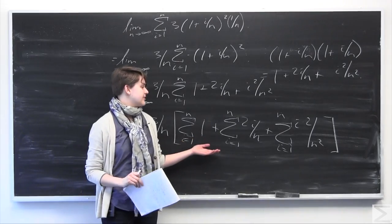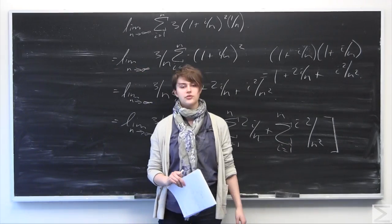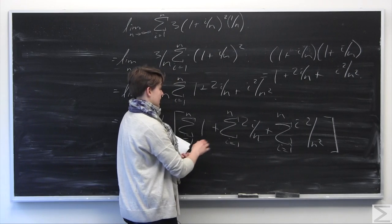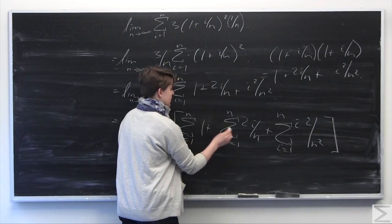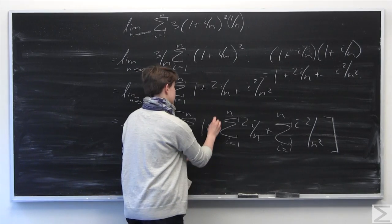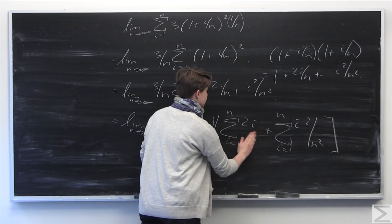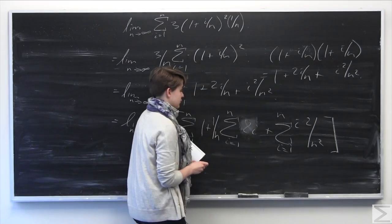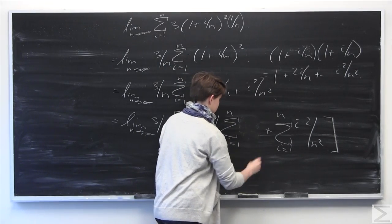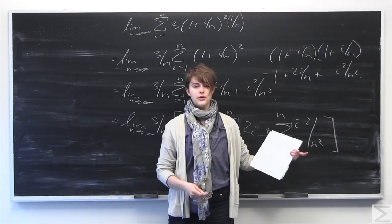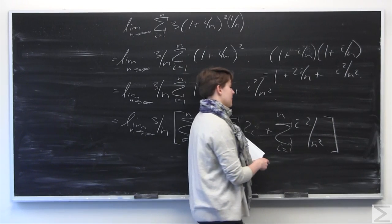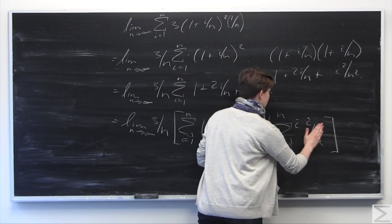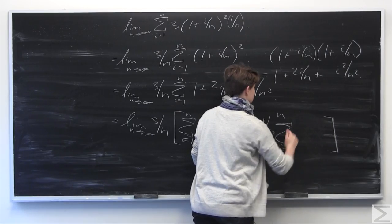Now we have three common forms: 1, 2i over n, and i squared over n squared. Since n does not depend on i, we can bring it outside the summations. From the second sum we pull out 1 over n, leaving 2i inside. From the third sum we pull out 1 over n squared, leaving the summation of i squared on the inside.